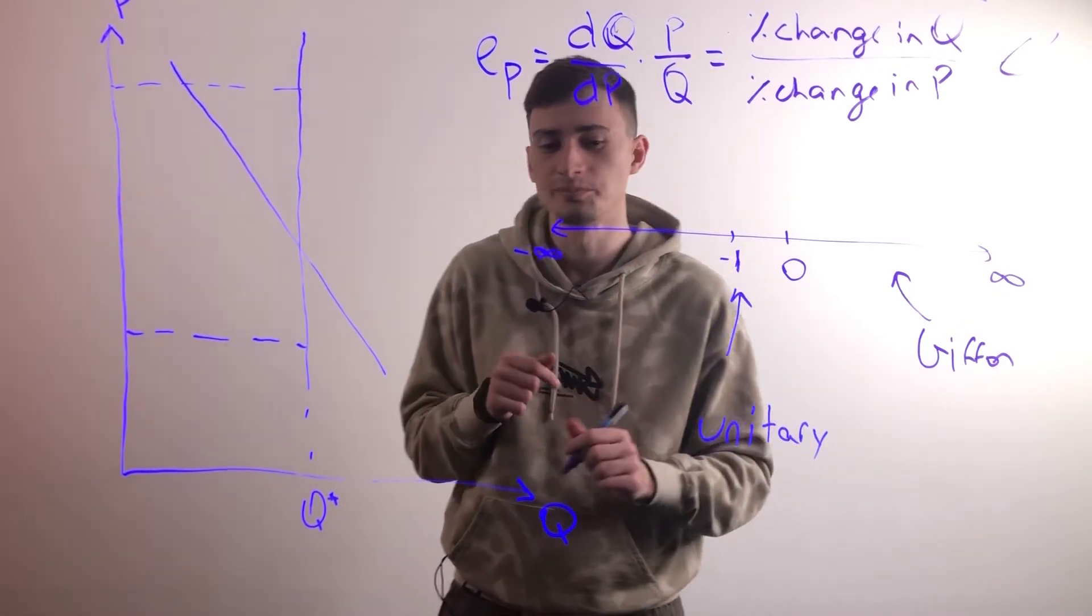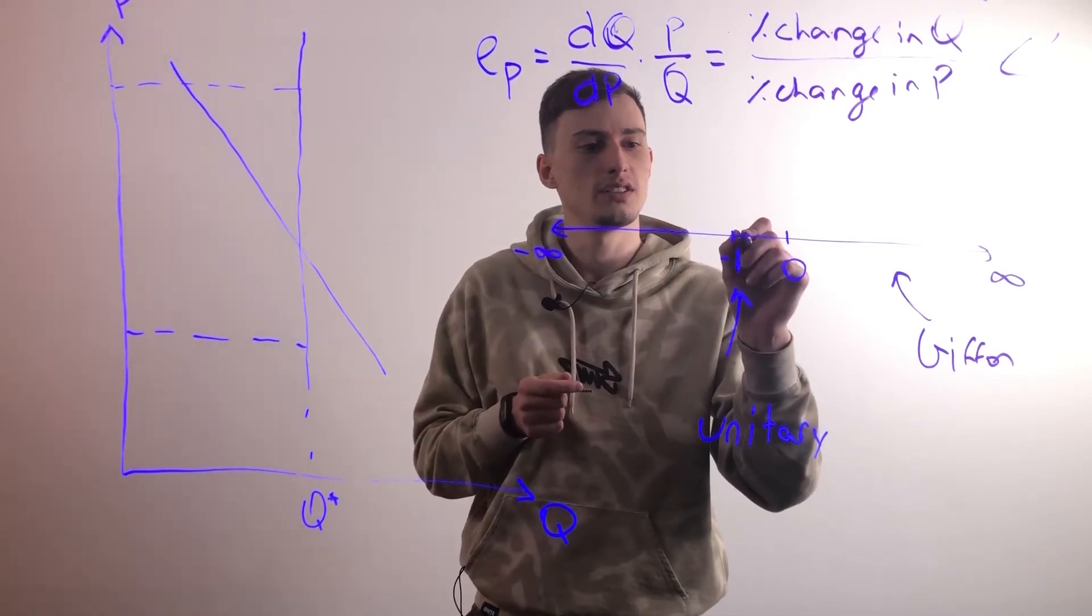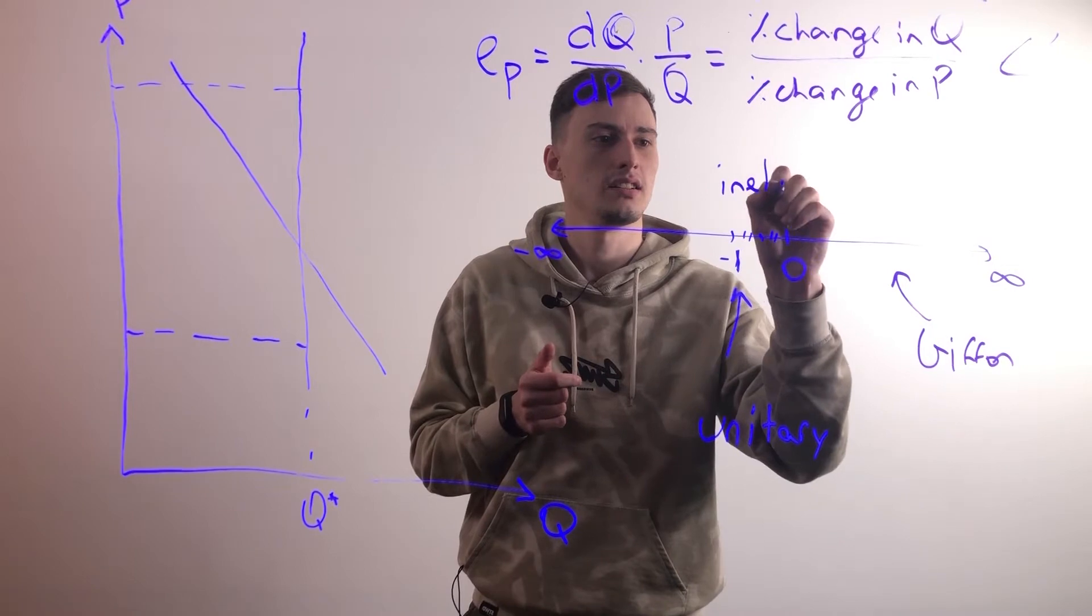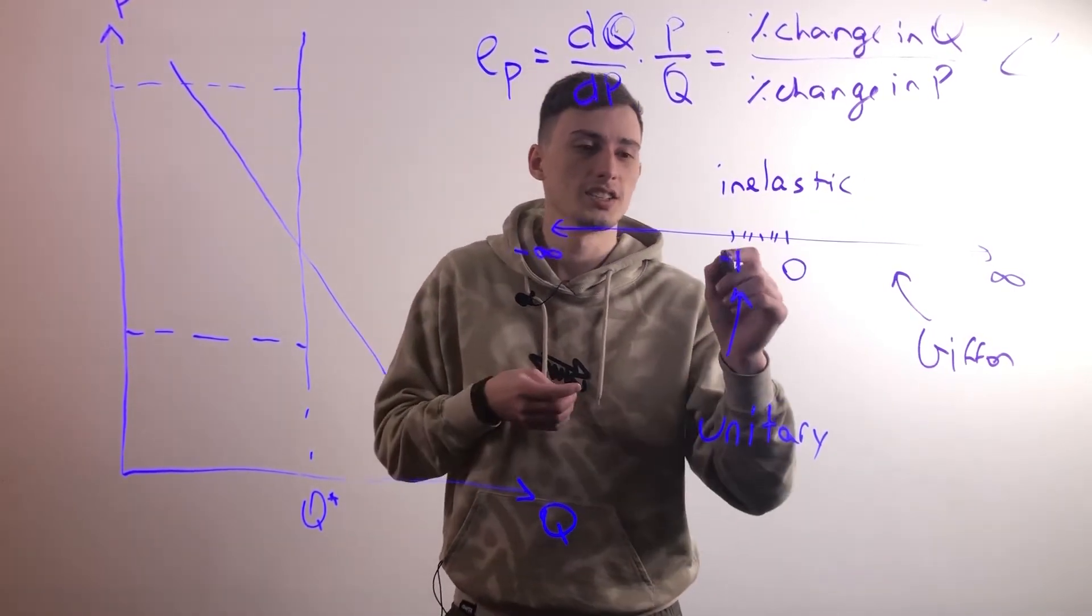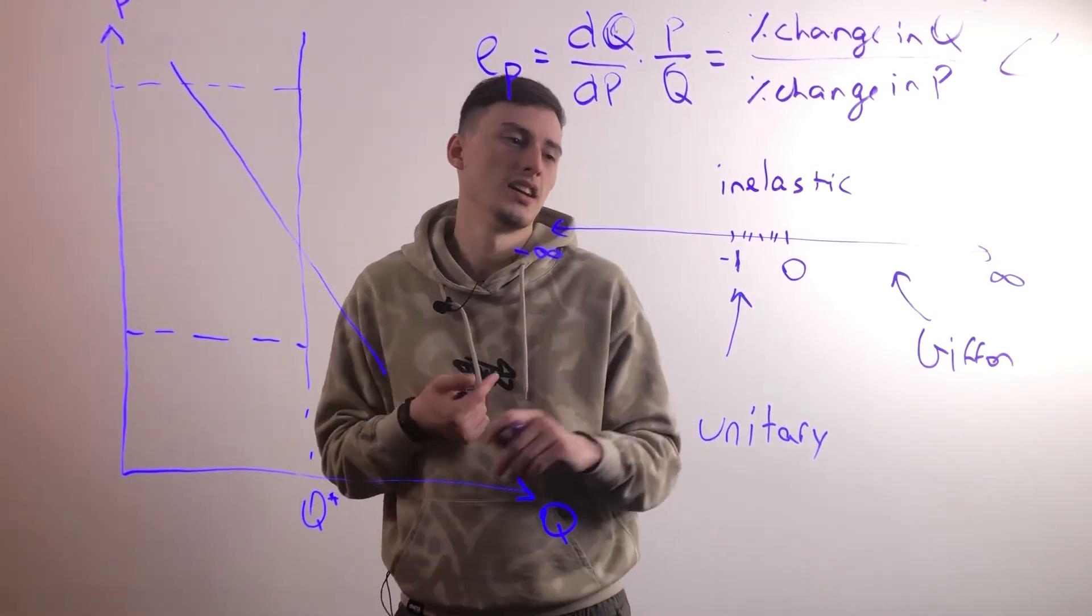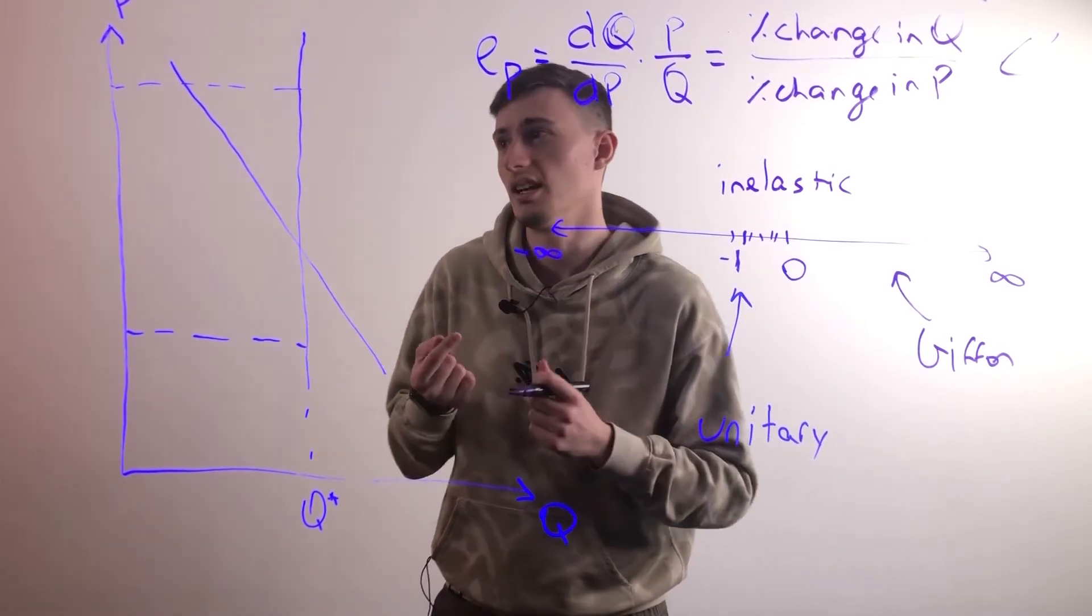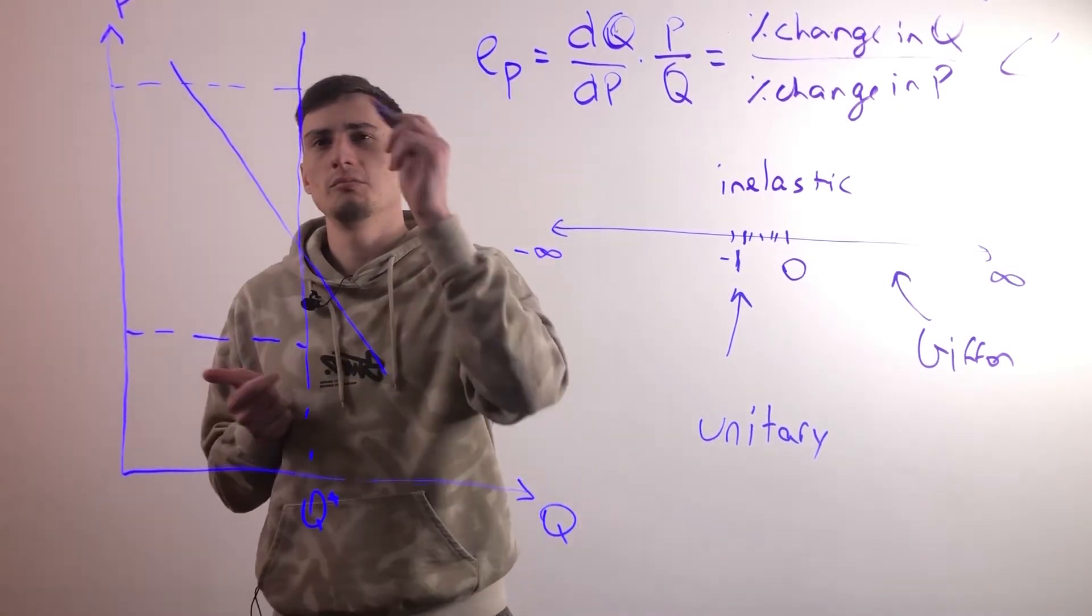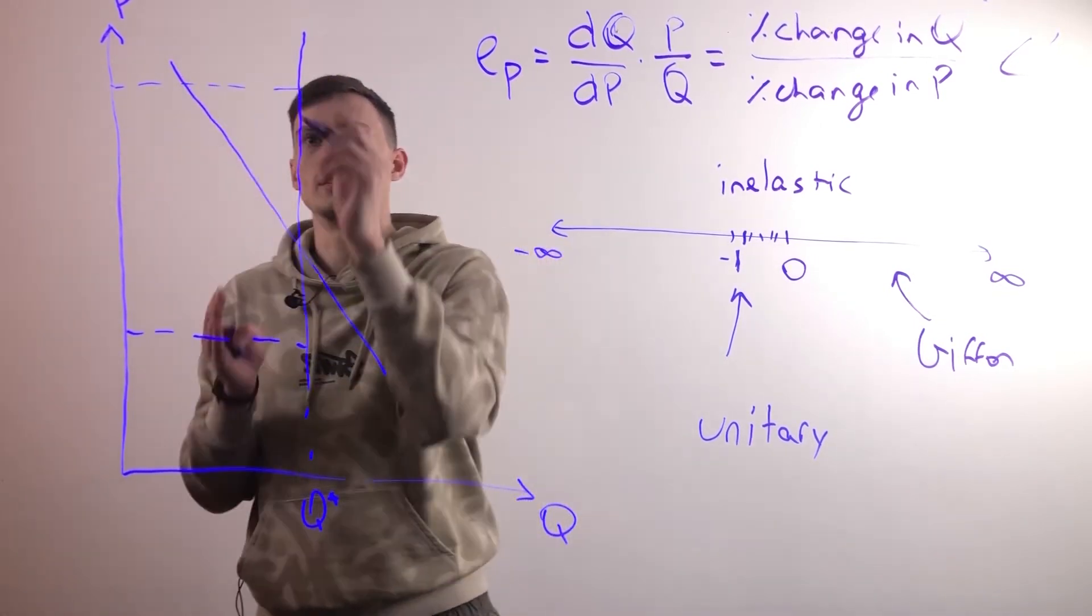Now if it's between negative one and zero, we call this inelastic, which means that the price doesn't change proportionally. So if we increase the price by one percent, the quantity demanded decreases by less than one percent. And that's common for really important goods, for necessities. And that would be somewhere, that line would be between the 45 degree line and the vertical line, so it would be something like this for example.